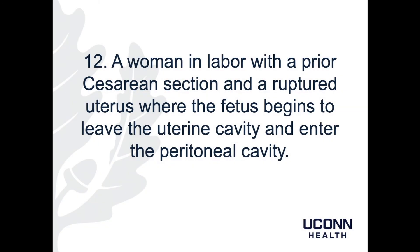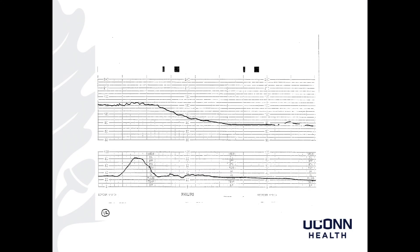Patient 12, our last case, is a woman in labor with a prior cesarean section and a ruptured uterus where the fetus begins to leave the uterine cavity and enter the peritoneal cavity. My read: baseline of 150s with eventually minimal variability, accelerations absent, and a prolonged deceleration. As the baby makes its way into the abdomen, it's completely not getting any oxygen. You can see off to the far right of the tracing that the heart rate is beginning to not be picked up. This is an absolute emergency in the setting of a ruptured uterus.